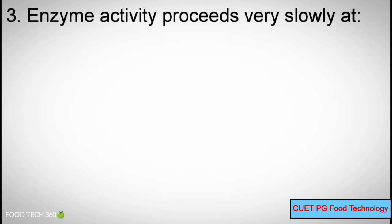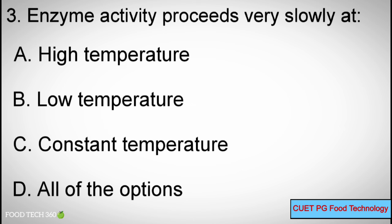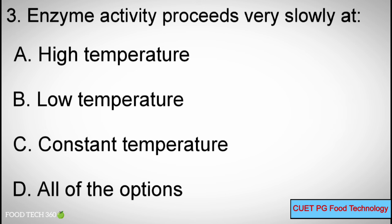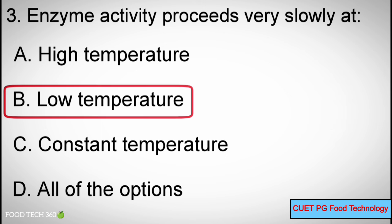Question number 3. Enzyme activity proceeds very slowly at — Options: A. High temperature, B. Low temperature, C. Constant temperature, D. All of the options. Correct answer: B. Low temperature.